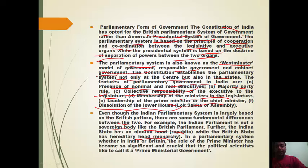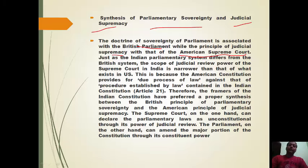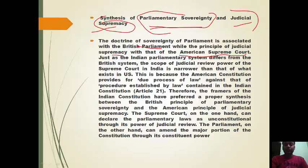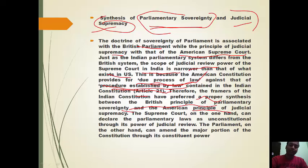The role of the Prime Minister has become so significant that political scientists call it 'Prime Ministerial government.' The Constitution is a synthesis of parliamentary sovereignty from Britain and judicial supremacy from the US. The scope of judicial review in India is narrower than in the US because America provides 'due process of law' while India's Constitution under Article 21 provides 'procedure established by law.'